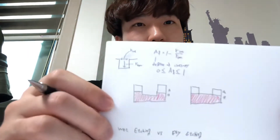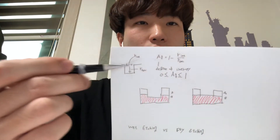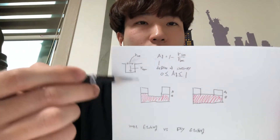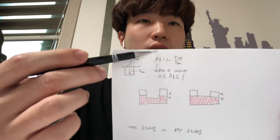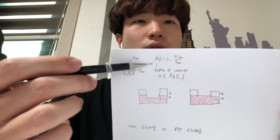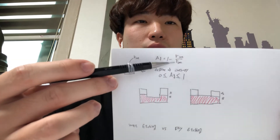Etching profile means the etching direction. Etching direction is isotropic and anisotropic. Look at this. This is the lateral relation. This is the vertical relation. So this is the degree. Degree equals 1 minus lateral relation over vertical relation.